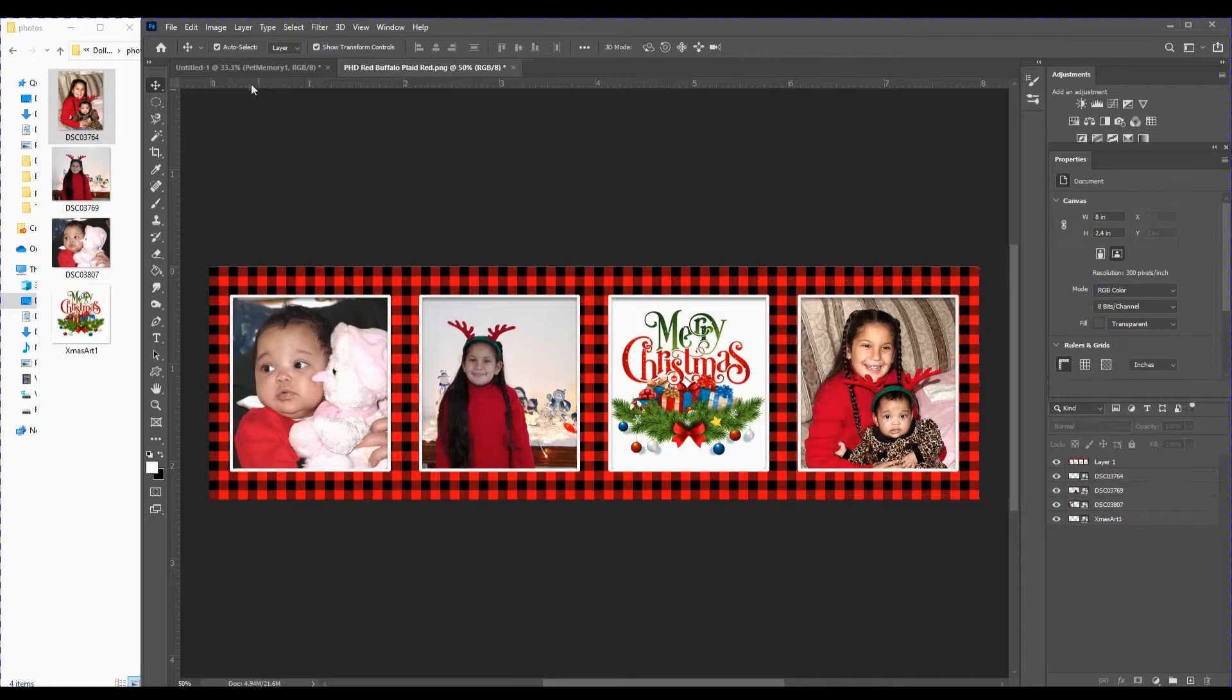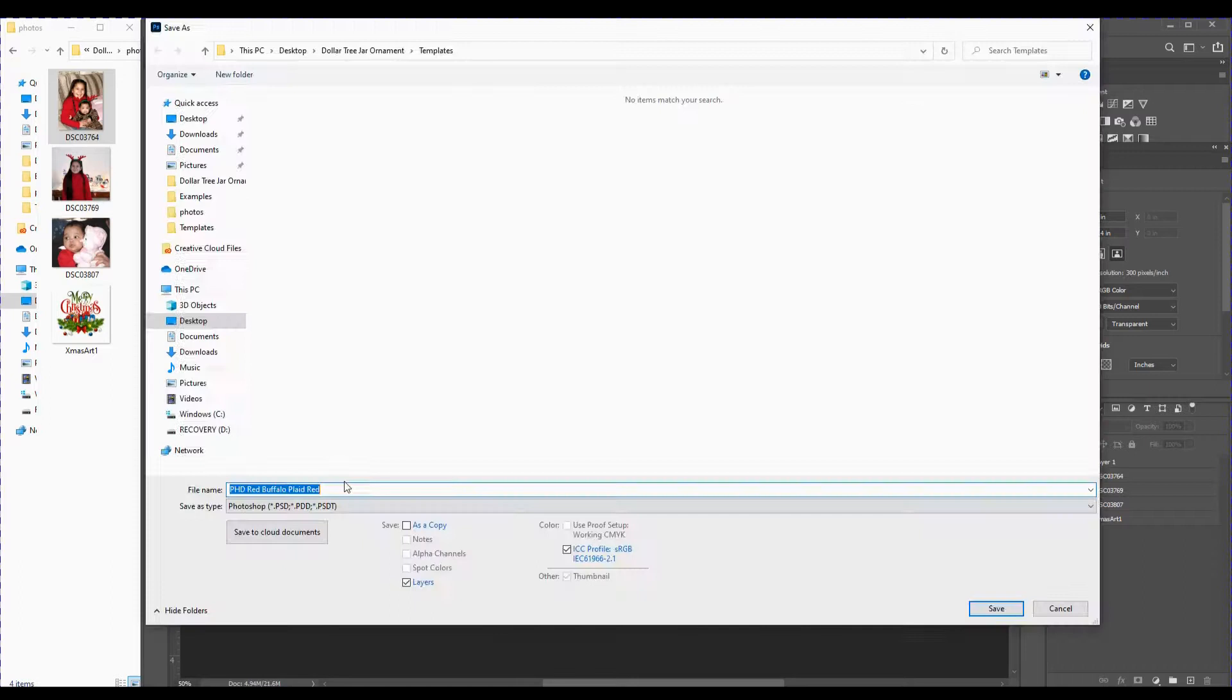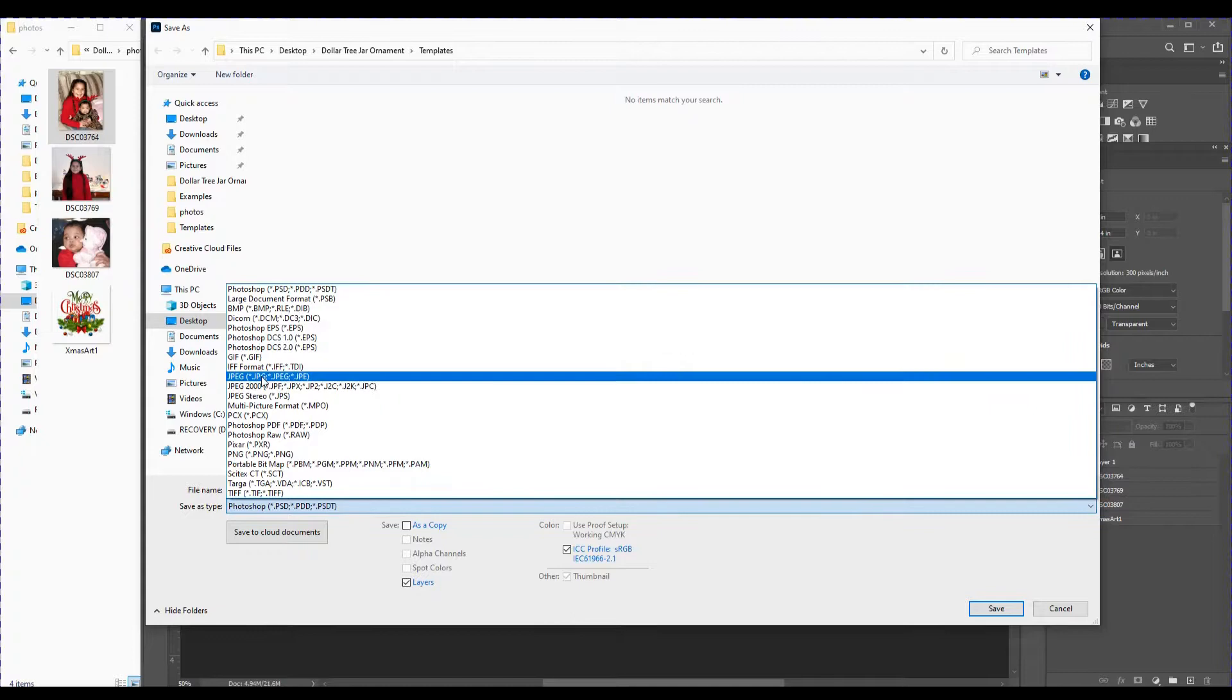So now that I've got this all complete I'm going to save it now. I'm just going to save it as a JPEG file so I'm just going to go save as and to the end of the template name I'm just going to type XMAS 1 and then I'll choose JPEG as the file format.